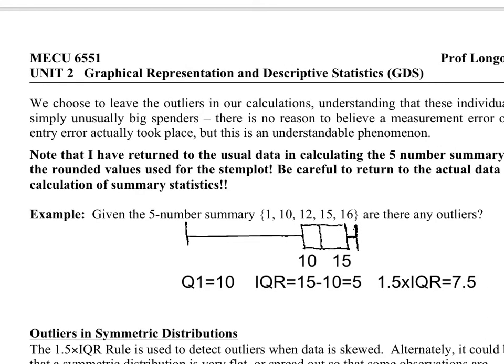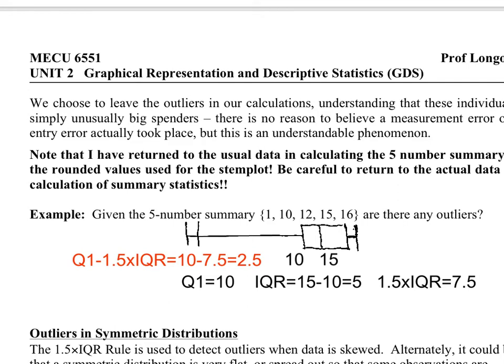Here are the main calculations. Q1 is 10. IQR is 15 minus 10, or 5. And 1.5 times IQR is 7.5. So I'll need to go back from 10 by 7.5, which gives a lower fence of 2.5. Outliers will be those observations found before 2.5.